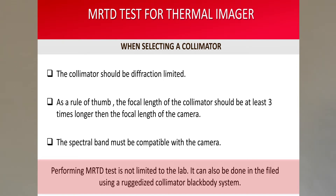For example, at CI we use mirror-based collimators with a spectral band from 0.4 to 14.6 microns. And lastly, remember that MRTD testing is not limited to the lab. It can also be done in the field using a ruggedized collimator and a blackbody system.